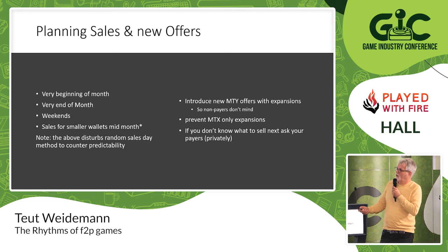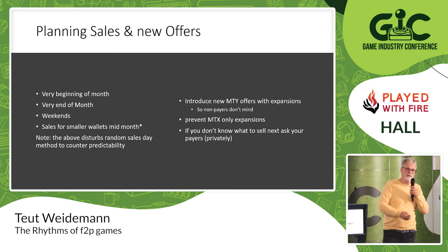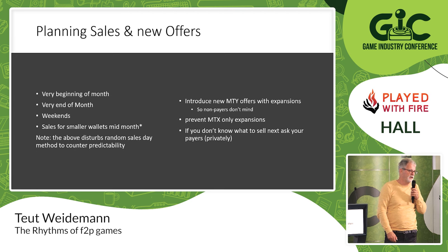In terms of sales and offers: do it at the very beginning or end of the month, or on weekends. For smaller wallets — 3, 4, 5 Euro sales — do a mid-month if possible. Always introduce new monetization offers with major expansions so players don't feel you're just after their money. Put new monetization stuff into normal gameplay updates. And my biggest tip: if you're running out of stuff to sell, ask your payers what they would pay for. They will tell you, you implement it, and they will pay for it. It works — we did that and it's selling like crazy. Ask your people — they're your fans.